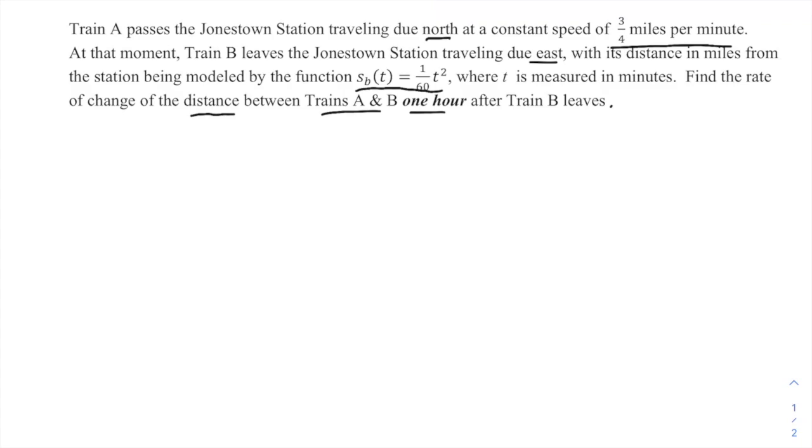Okay, a lot to unpack there. We've got a common station here, Jonestown Station, and we've got Train A traveling due north from there. That's Train A, and it's traveling at a speed of three-quarters of a mile per minute. So I'm going to call this distance here something—call it x.